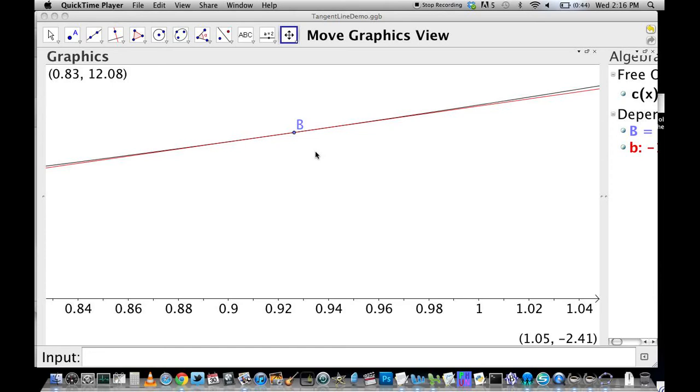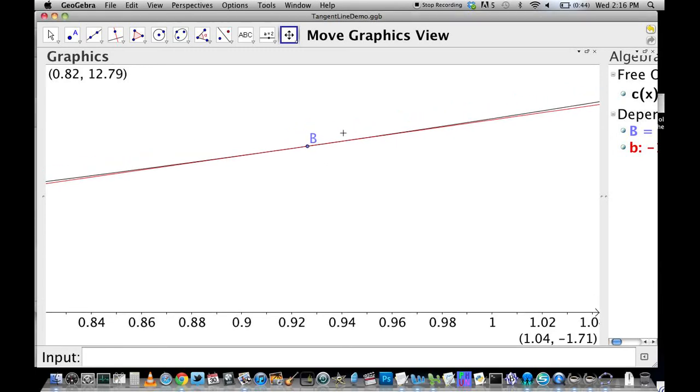So just from these three things that hopefully you noticed about the graph, we can start to develop an understanding of this method of analysis that we're going to call a tangent line. The red line that you see is in fact a tangent line for the black line, and it's important to notice at this point that they both look straight.